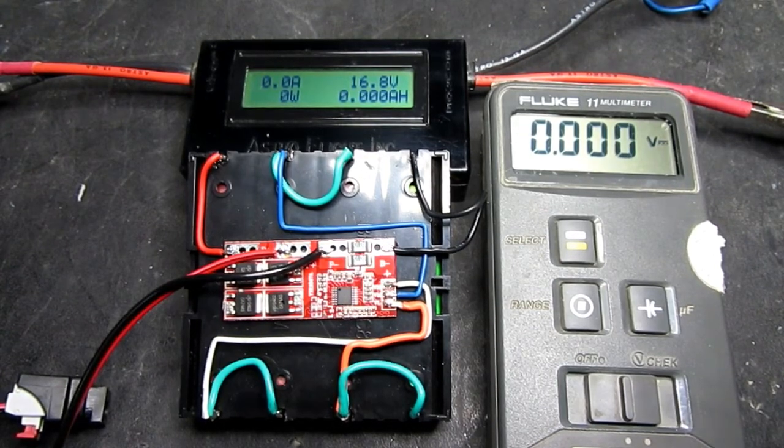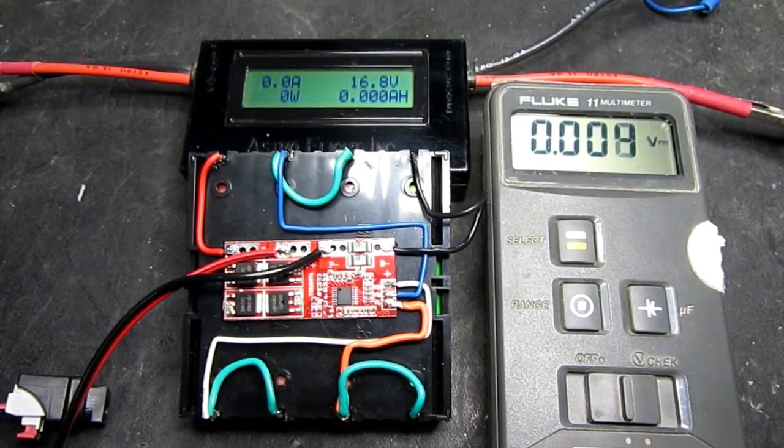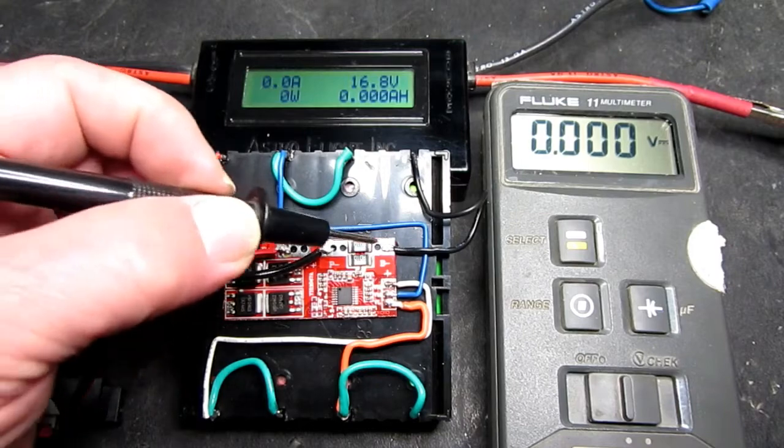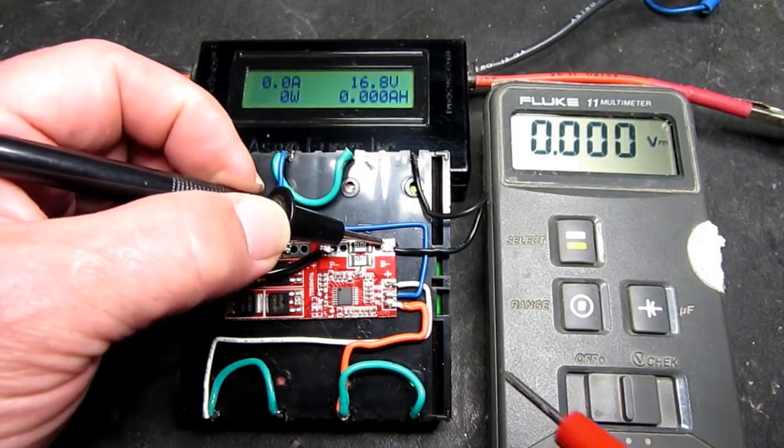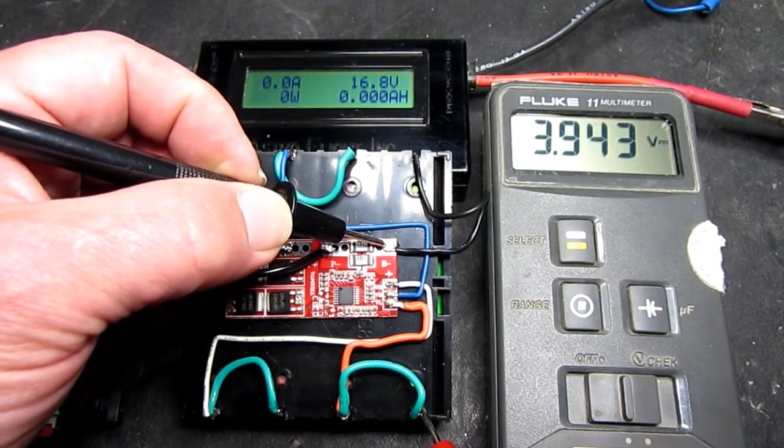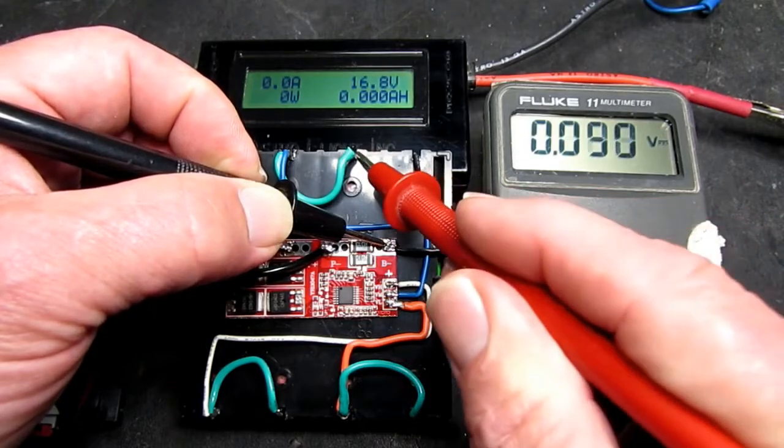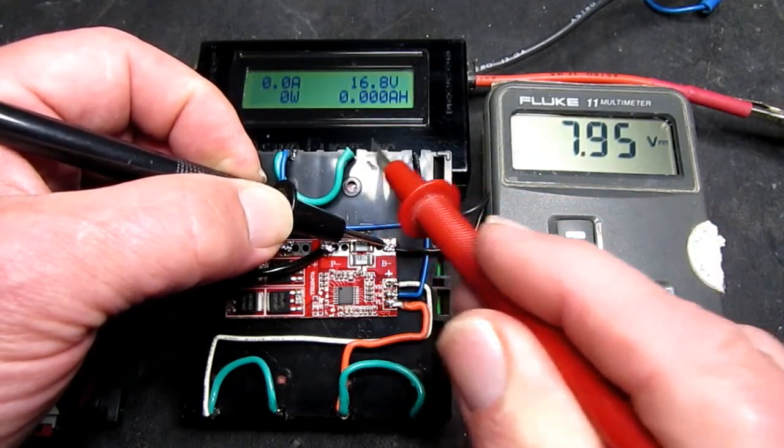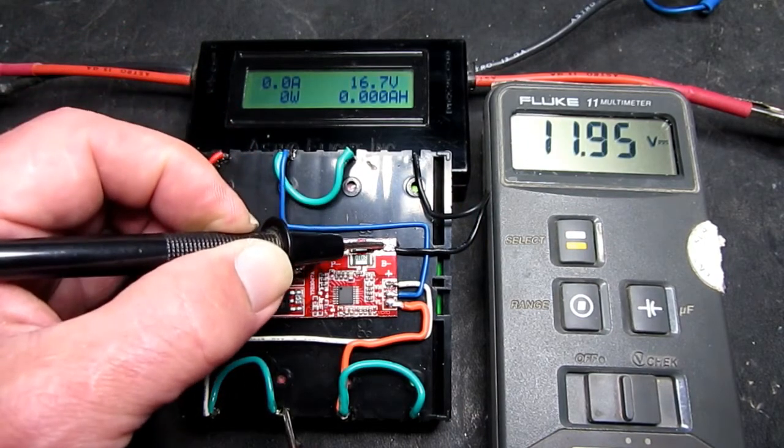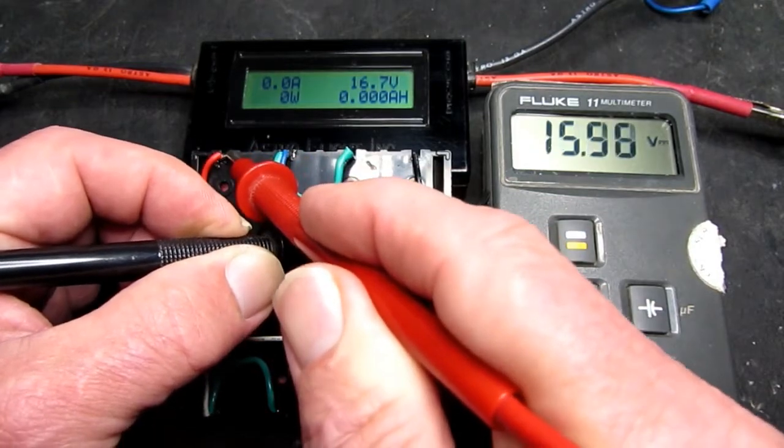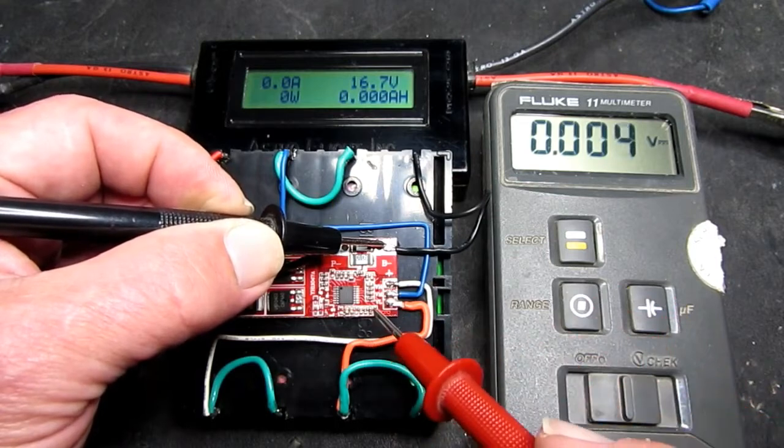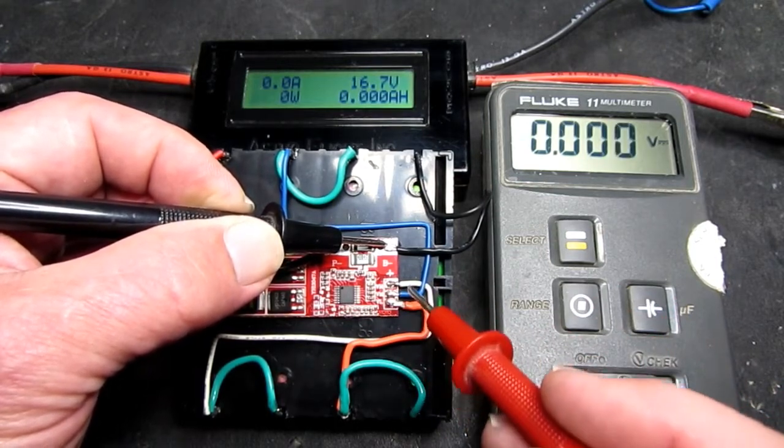With the cells wired pretty much as before in my original video, if we take a look from the battery negative, you've got the first cell here showing 3.9V, then the second cell 8V, third cell 11.9V, and finally 15.98V.